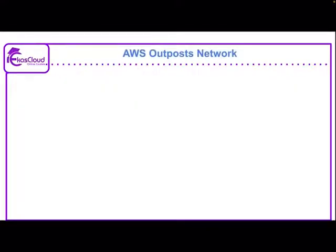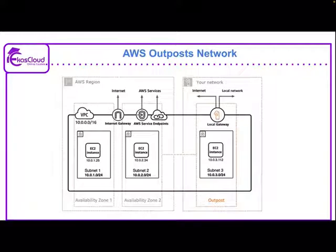Now we will see AWS Outpost Network and how this network plays a role. Initially we should have an AWS region, then that information will be maintained and managed by AWS. In our network, the AWS services need to be linked properly so that local redundancy and interdependency services function smoothly. This is the finest part of the AWS Outpost network.